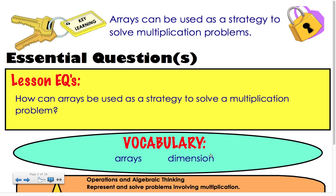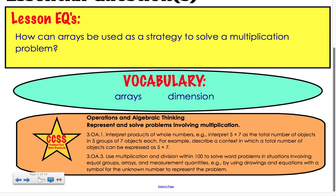We have two new terms for vocabulary this week: arrays and dimension. And why are we talking about arrays and dimension and multiplication? Because our third grade Common Core State Standards said third graders should be able to represent and solve problems involving multiplication. One strategy that they should be able to use are arrays to represent the problem and to determine the unknown number.